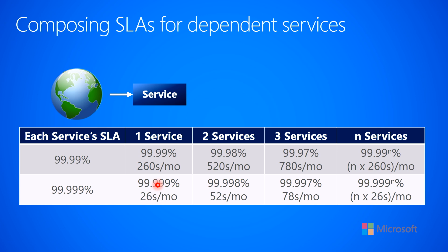But now, if you split this service into multiple services that have a dependency between each other, and each of these services has a 99.99% uptime, then because of the dependency, you're now at 99.98% for your service level agreement. So you would have to work harder in order to achieve the desired 99.99% from the consumer's perspective. And if you're at 99.98%, that means you now have a downtime of possibly 520 seconds per month.